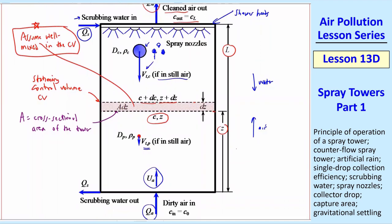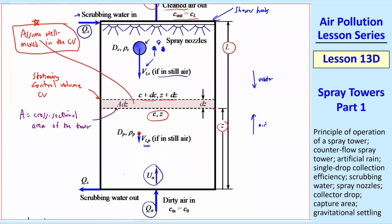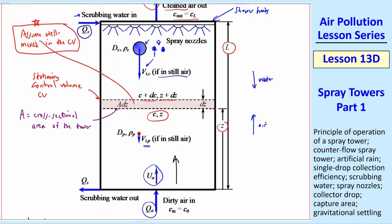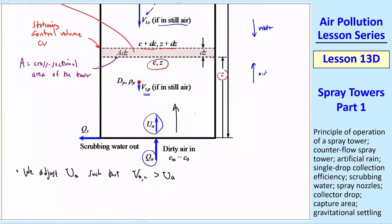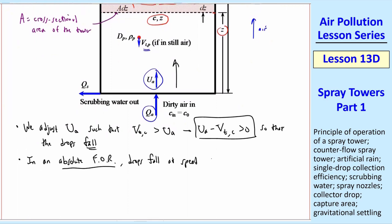We'll make an approximation that everything is well mixed in this little slice in the control volume. That will allow us to come up with our equations. So how these things actually work is we adjust the airspeed UA such that VTC, the settling speed of the collector particles, remember C is collector, so that's the drops, is still greater than UA. Otherwise, if you had such a fast U going up here that these water drops aren't falling as fast as UA, they would come out of the shower and just go straight up to the ceiling and then collect up there and they wouldn't fall as drops, or they'd coagulate and fall as big drops, which is not what we want.